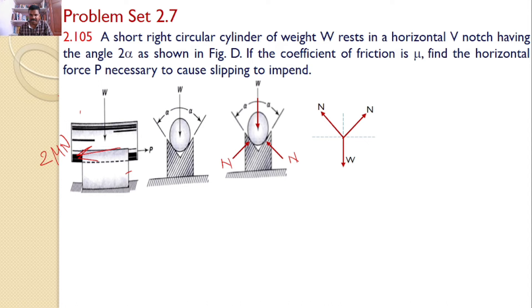If you transfer all these forces onto separate xy plane, clearly we can see W is acting in the downward direction. This normal reaction N acts in a direction which makes an angle α with the horizontal and this N makes an angle α with the horizontal, same is represented here.